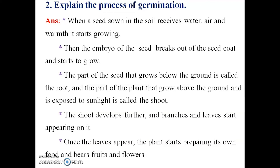Once the leaves appear, the plant starts preparing its own food. The sapling's leaves allow it to prepare food, and the plant starts bearing fruits and flowers. This is the process of germination.